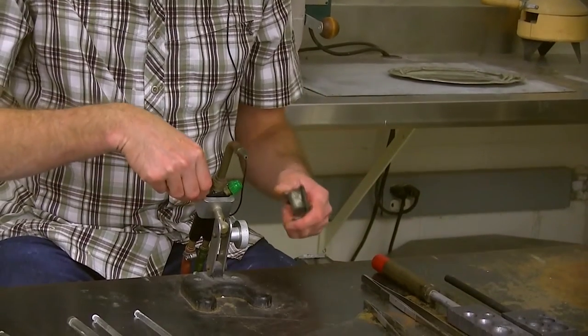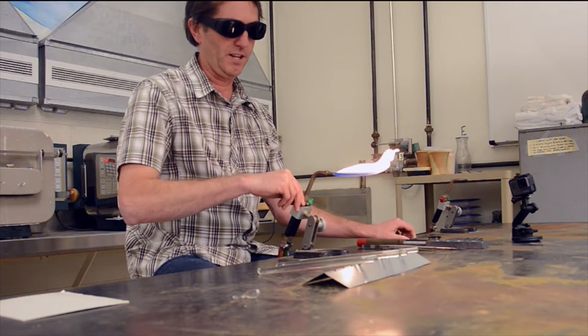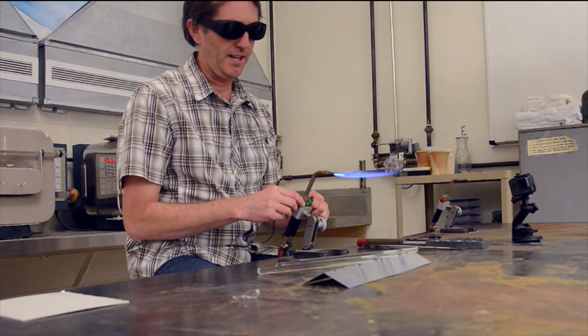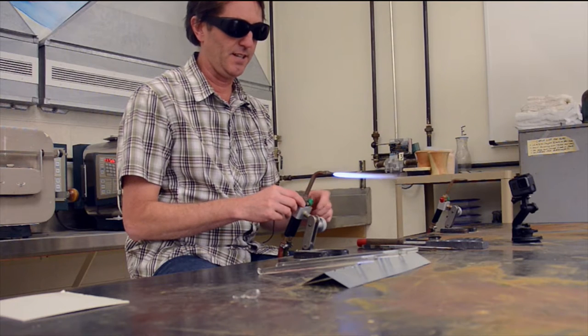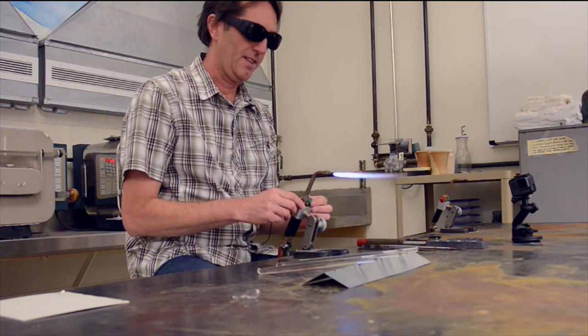I'm going to use a striker here and turn on gas just enough to ignite it. I want kind of a long flame and then I'm going to bring oxygen into it. There's a little cone in there about a centimeter.